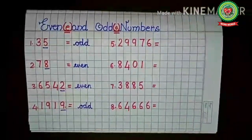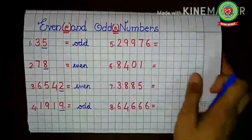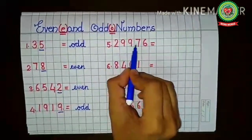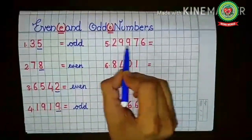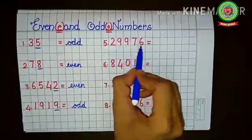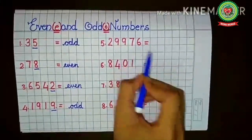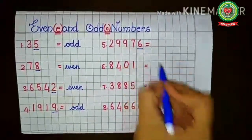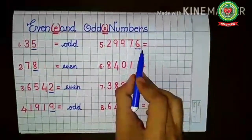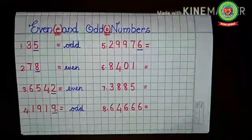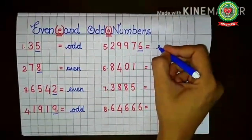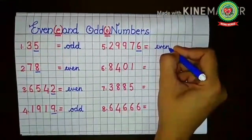Next is 29976 — twenty-nine thousand nine hundred seventy-six. The number is big, but we look at the last digit only — six. Six comes in the table of two: two threes are six. So this full number is an even number.